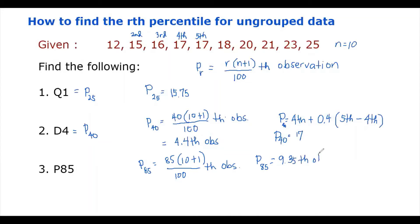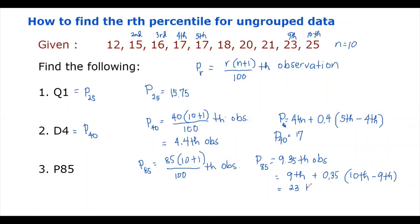This gives us the 9.35th observation. The 9.35th observation is the 9th plus 0.35 times (the 10th minus the 9th observation). The 9th observation is 23 and the 10th is 25, so this is 23 plus 0.35 times (25 minus 23), which is 23 plus 0.35 times 2, giving us 23.7. So the 85th percentile is 23.7.